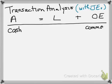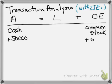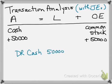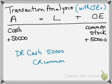The first transaction was the owner invested cash in the business and received common stock as evidence for that investment. The dollar amount was fifty thousand dollars, so we had an increase to cash and an increase to common stock. Assets follow the plus-minus rules, so to increase cash we would debit cash for fifty thousand dollars, and common stock is an owner's equity which is a minus-plus, so we credit common stock for fifty thousand dollars to increase that balance.